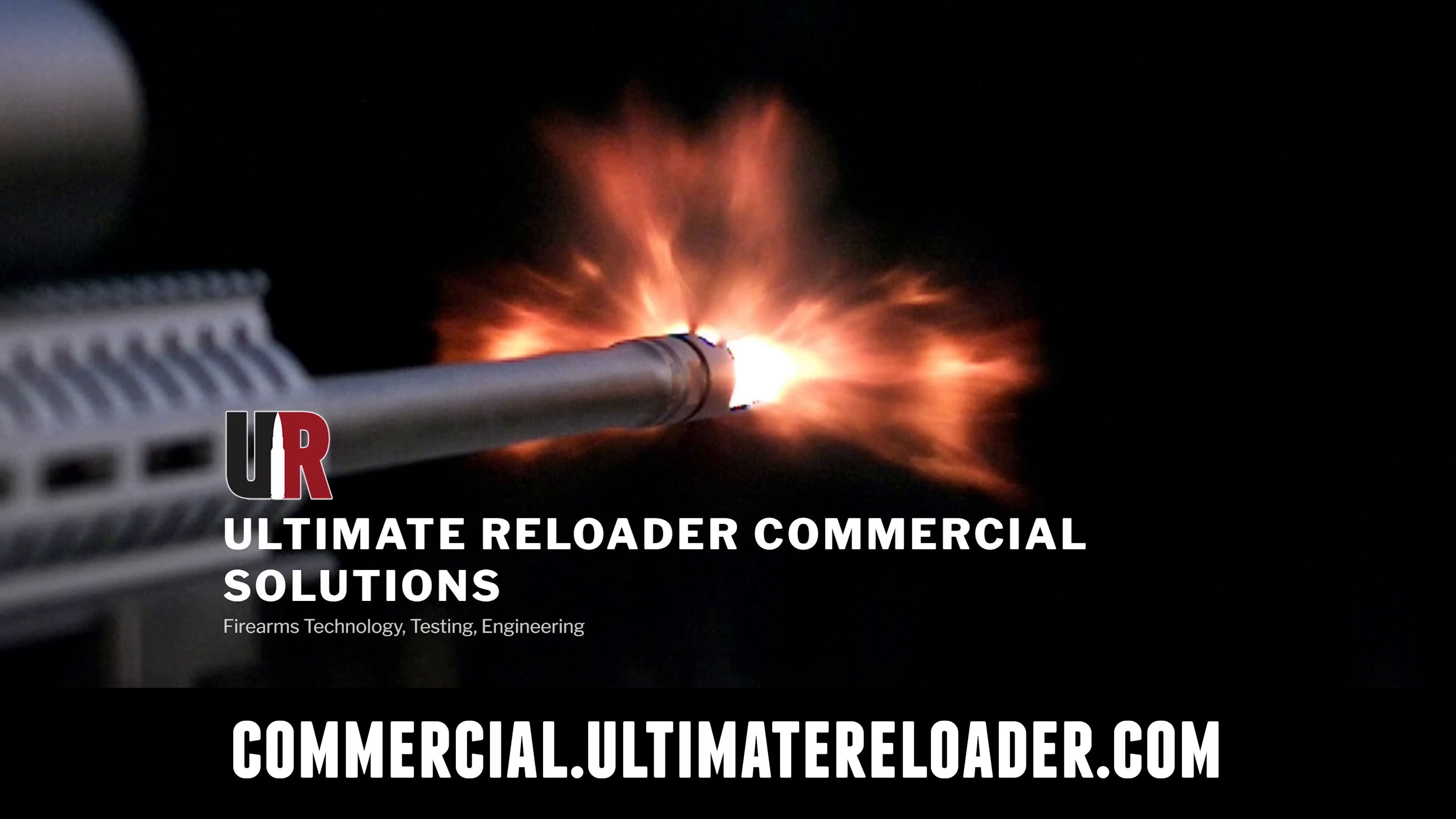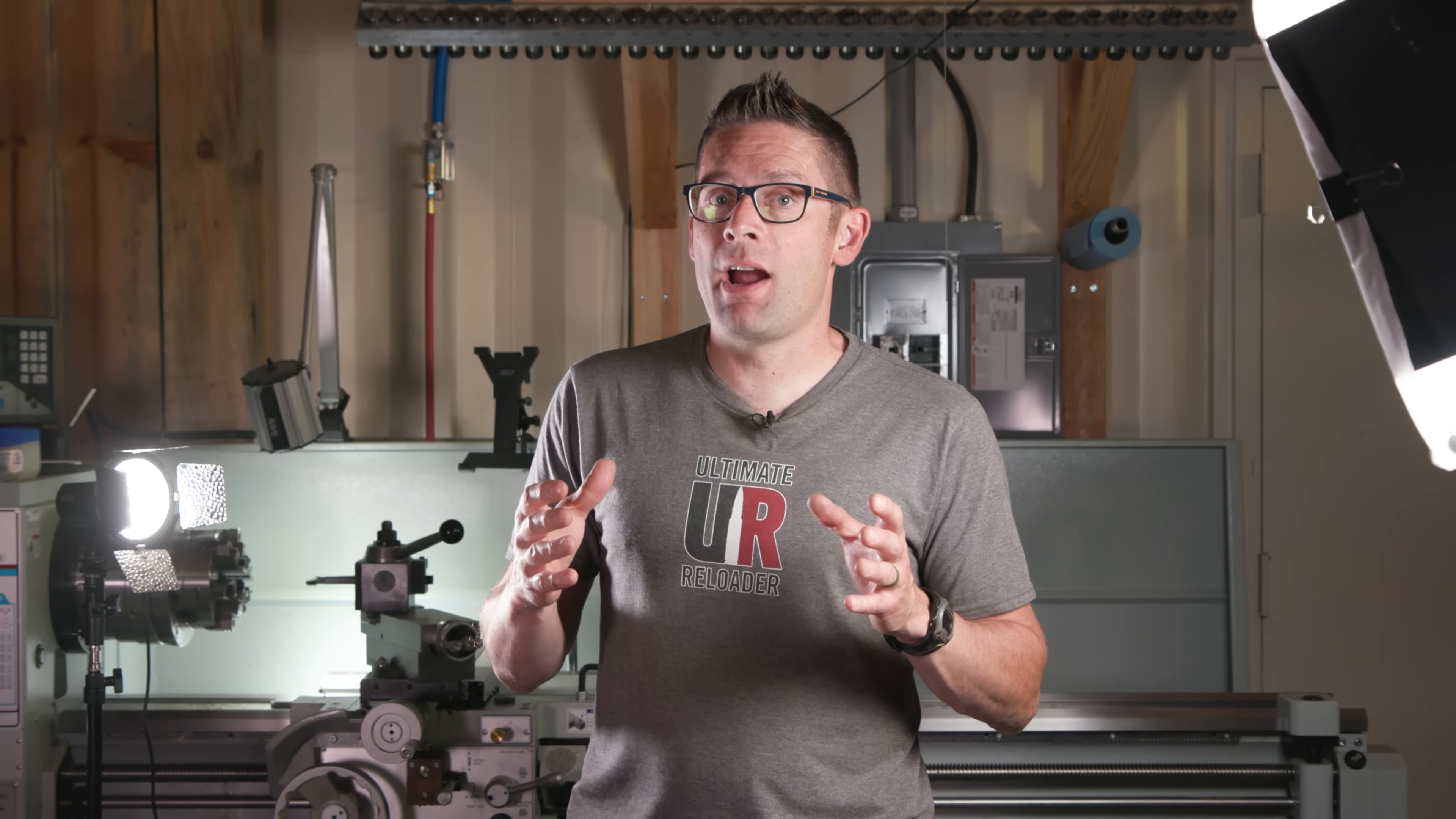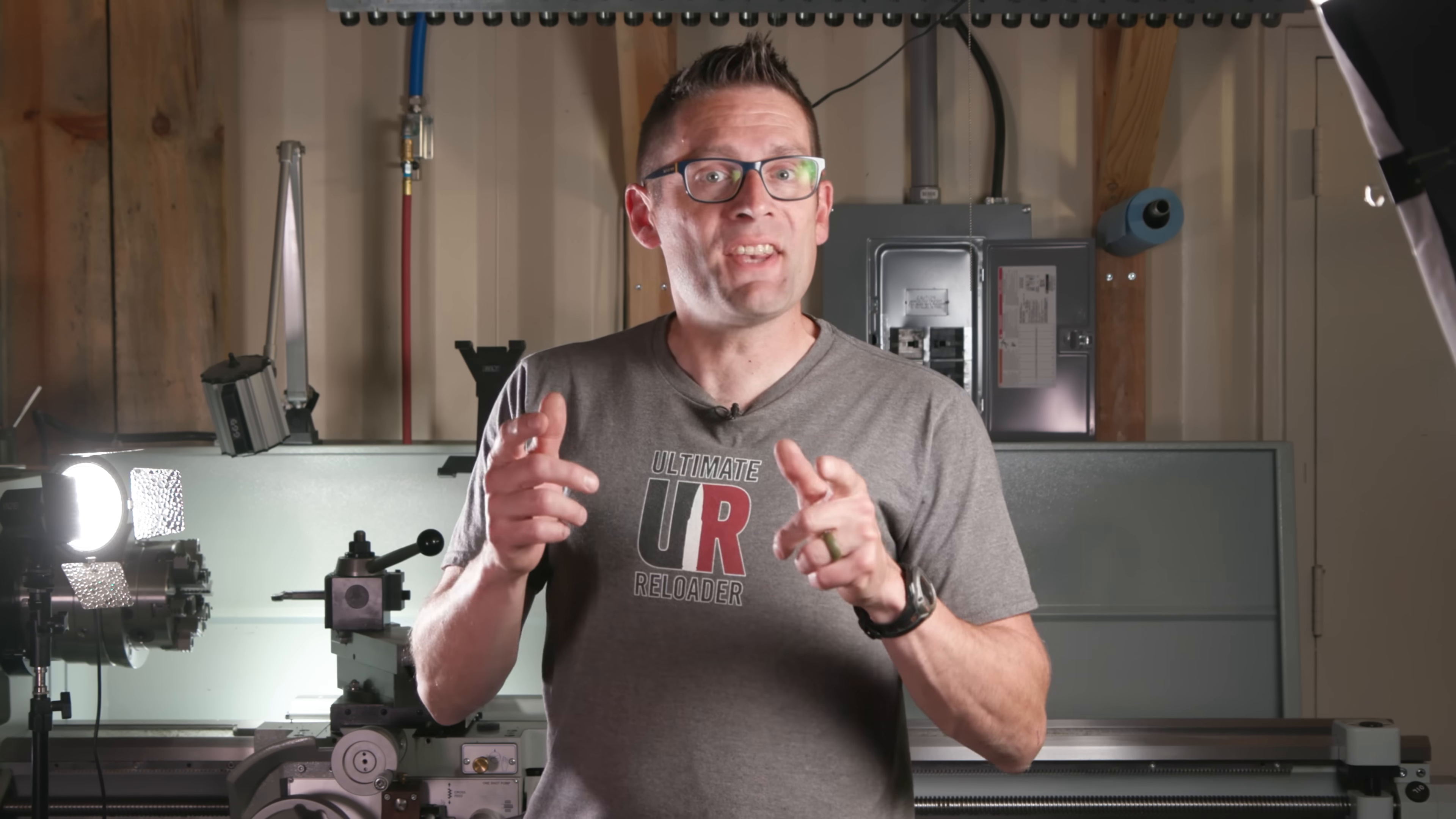Ultimate Reloader also has a commercial solutions division serving law enforcement, the military and the gun industry. We have some unique capabilities, including a comprehensive suite of recoil testing and evaluation capabilities, trigger profiling and more. If you're interested in custom rifles like what we build here on the channel or gunsmithing services, you're going to want to go to rifles.ultimatereloader.com and get on the waitlist. If you want to learn lucrative gunsmithing like what I show here on the channel, including building custom rifles and Cerakote plus a whole bunch more, check out the Colorado School of Trades, schooloftrades.edu. Thanks again for watching.